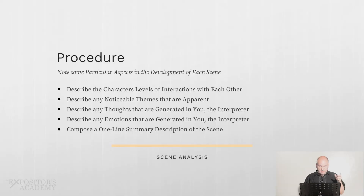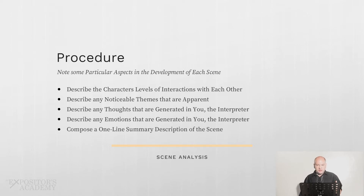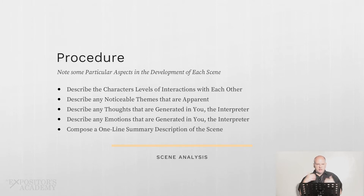Once you know what your scenes are, there's a way to go about describing them. You need to describe the character levels of interaction in each scene. You need to describe any noticeable themes that are apparent. Describe any thoughts that are generated as you read that scene — what's being said, what's happening, what thoughts come to your mind. What emotions come to you? How does it make you feel? Then you want to compose a one-line summary of the scene.